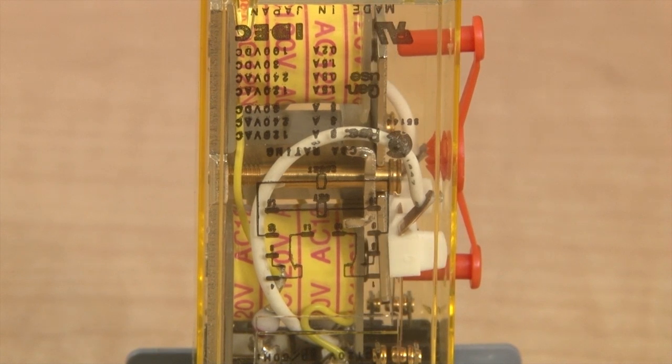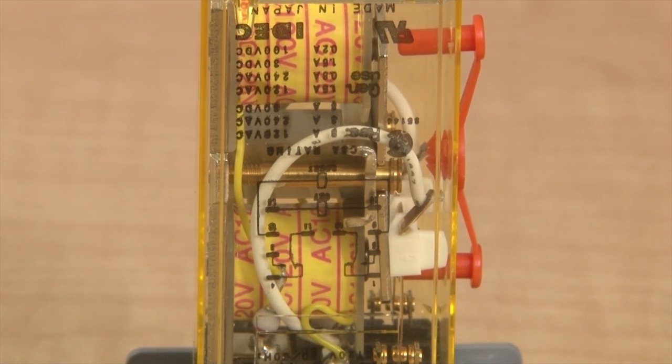A latching relay actuates when a pulse of coil power moves the metal contact in one direction.